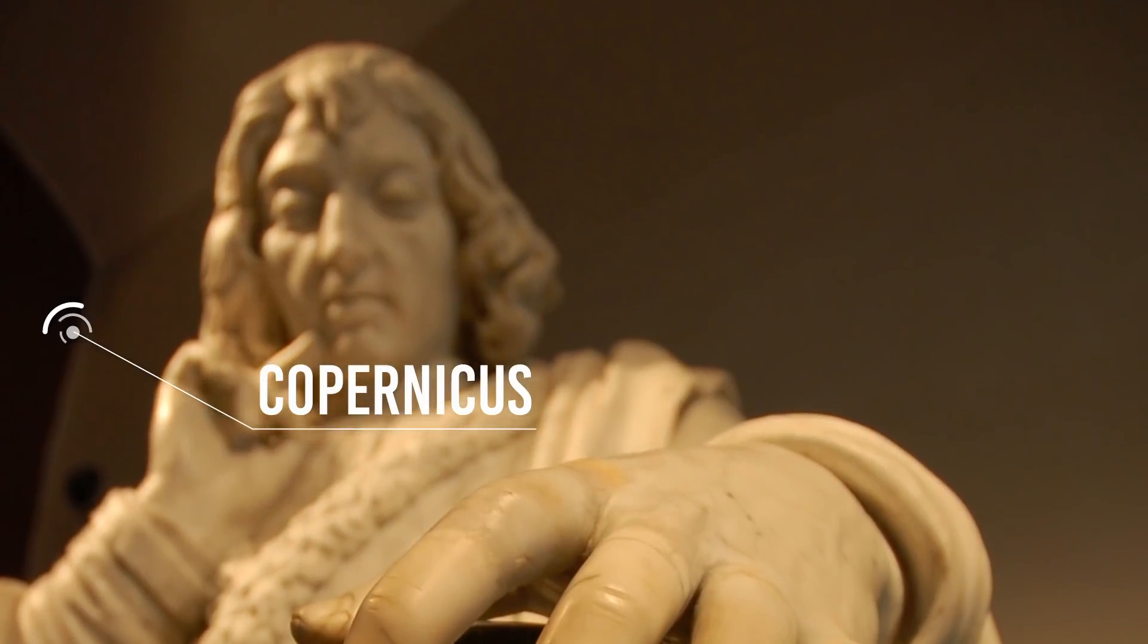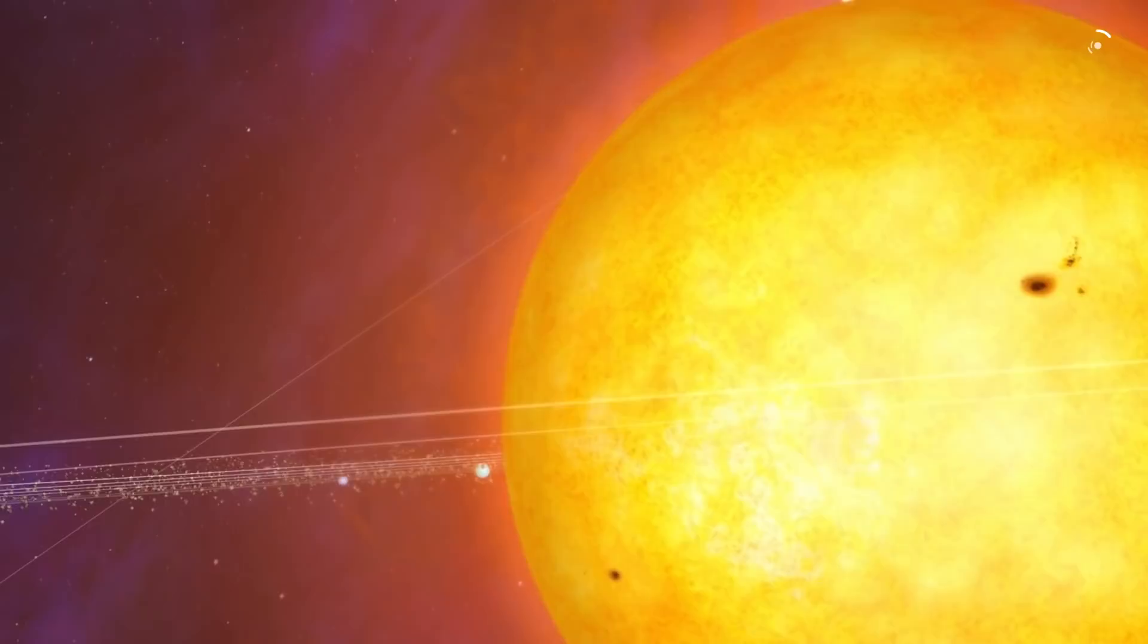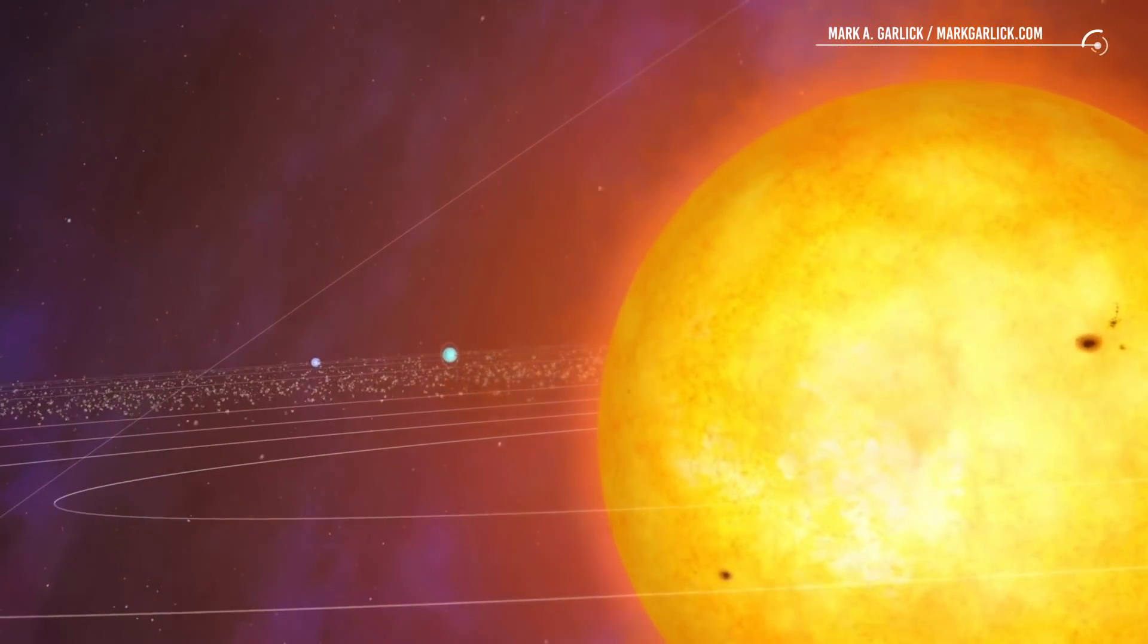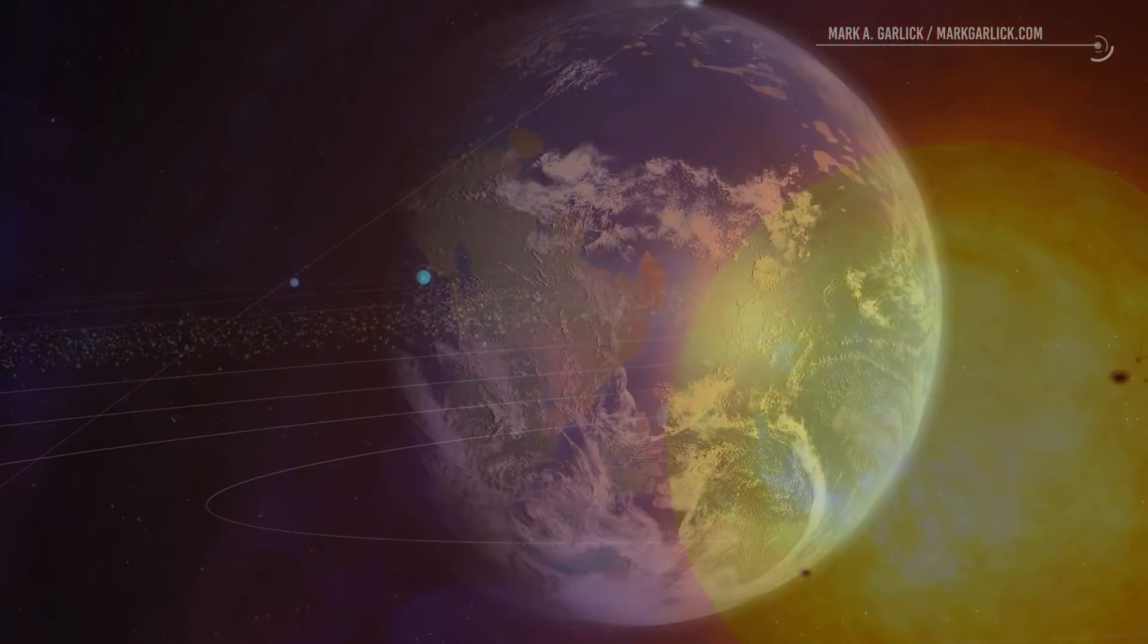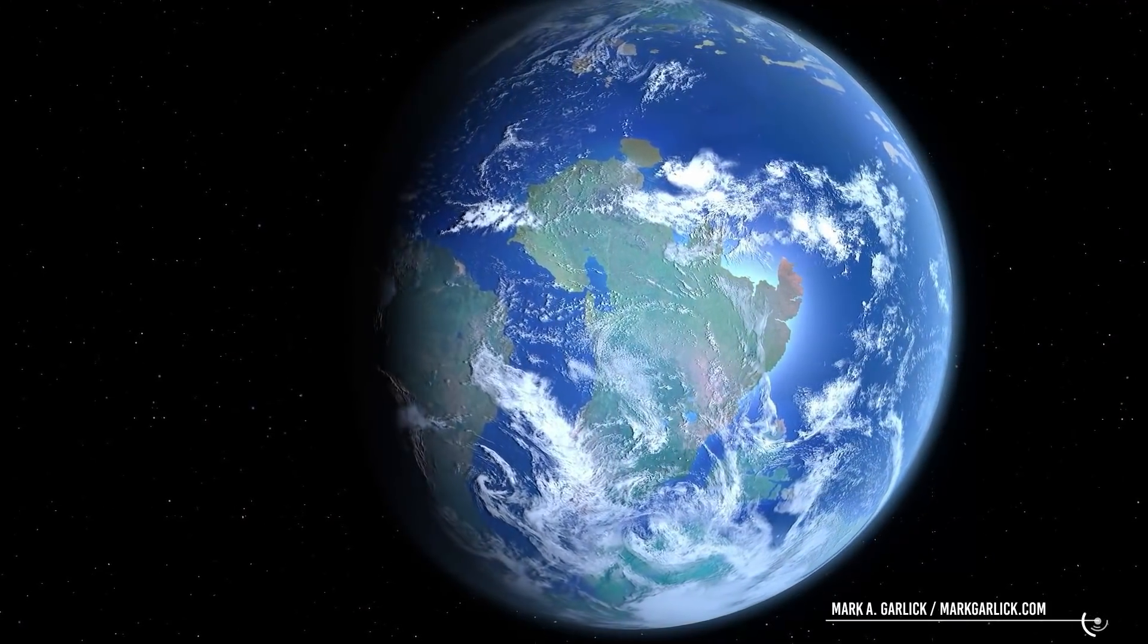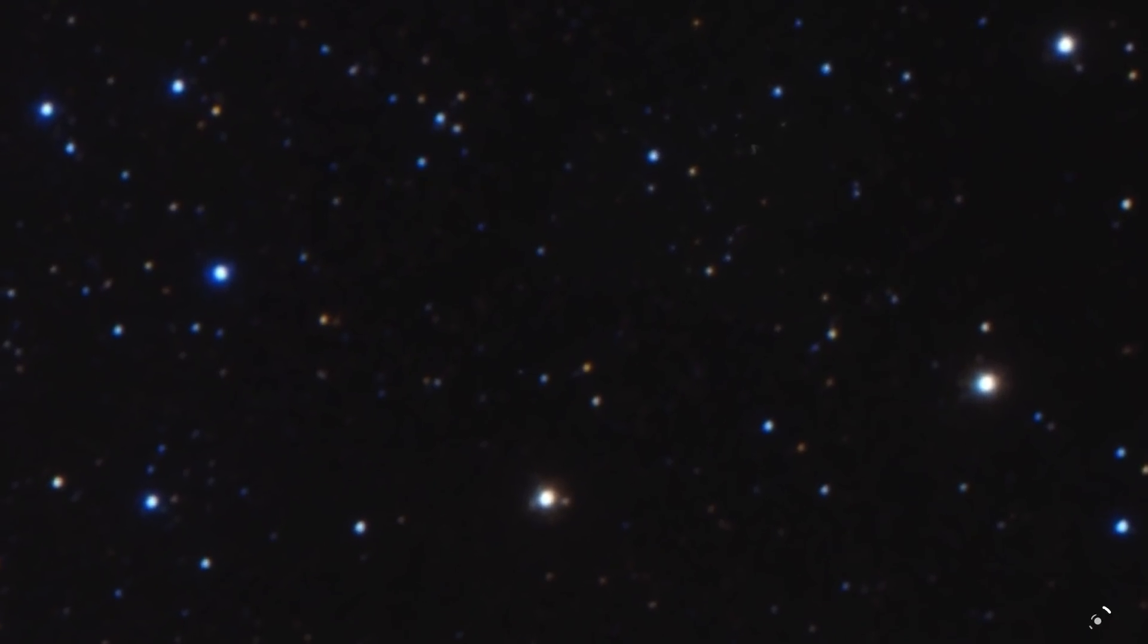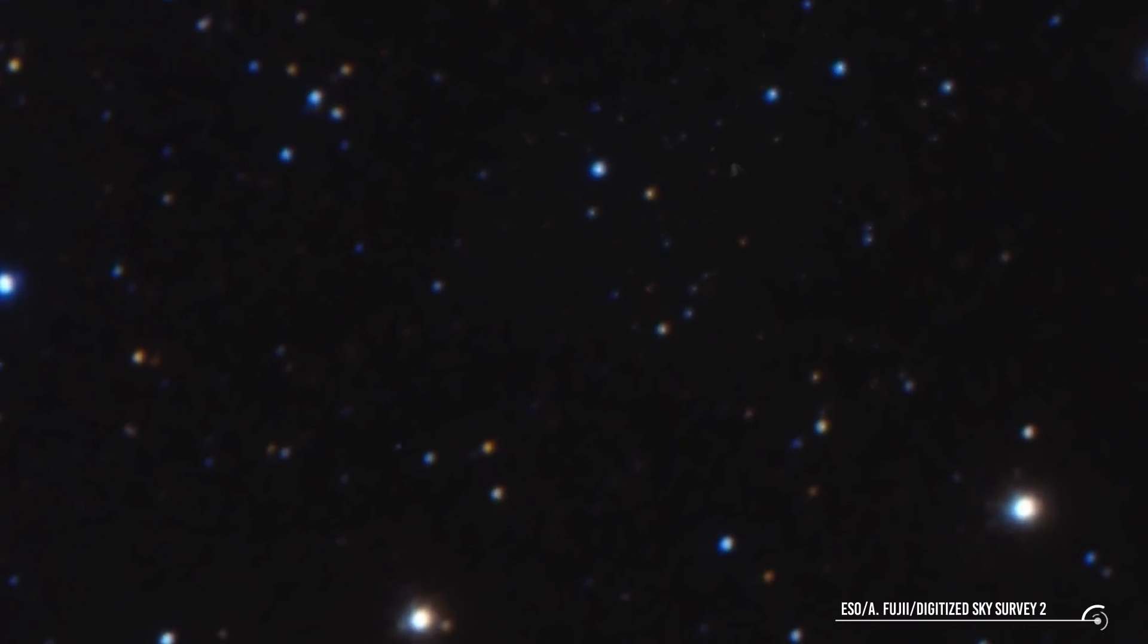Ever since Copernicus came and discarded our special status in the solar system and that we are not at the center, scientists have been building upon his idea. Now we know that we live on an ordinary planet in an insignificant part of an ordinary galaxy. But what about the universe? Is there only one universe or multiple ones?